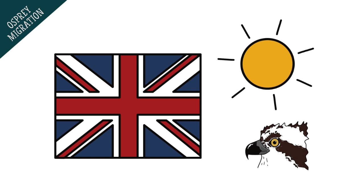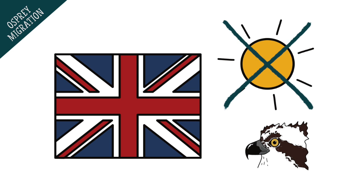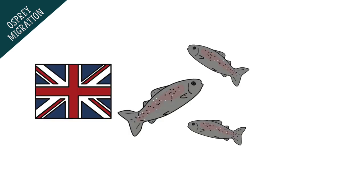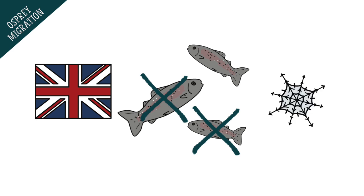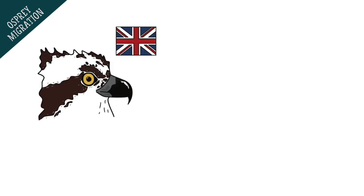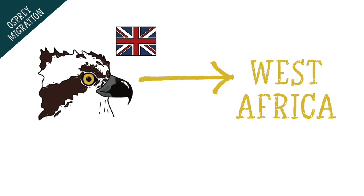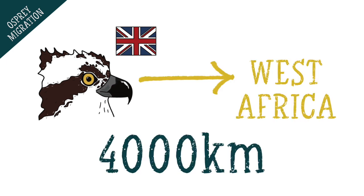But we all know that winters in the UK aren't at all sunny and aren't suitable for ospreys. Not only is there less food available, but lots of the water and land becomes covered in snow and ice which makes hunting difficult. So it's not worth the risk of staying here over the winter — instead they are much more likely to survive if they make a 4,000 kilometre journey.